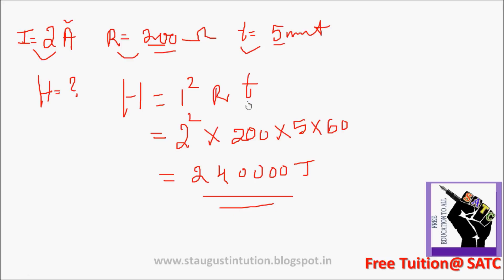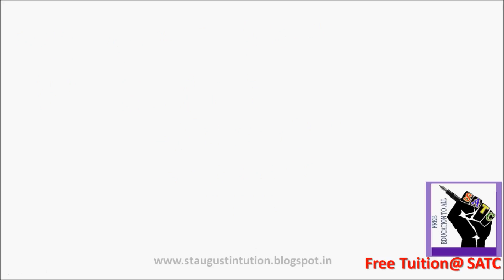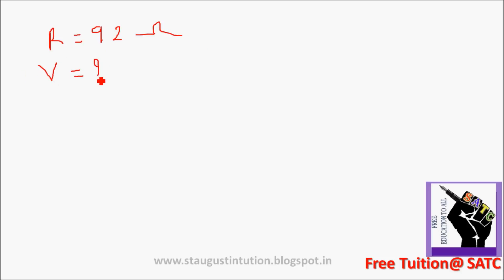The next problem: resistance is 92 ohm. Clear? Potential difference is 23.30 V. Clear? Time is 14 minutes. This is heat.